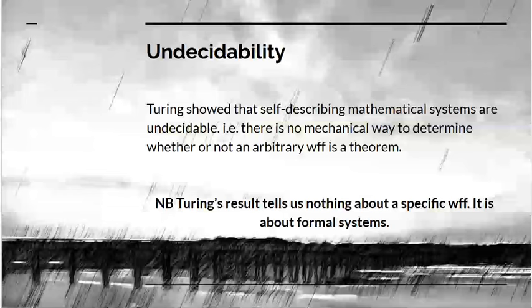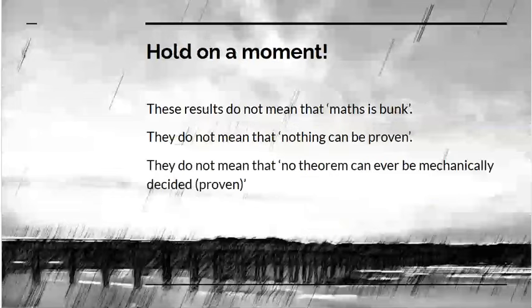We want systems to be consistent, so we must accept that there may be some theorems which can't be proved if Gödel is right. Turing's point was to show that the decision problem couldn't be achieved, that self-describing mathematical systems are undecidable. There is no mechanical way to determine whether an arbitrary formula is a theorem. But it tells us nothing about a specific formula. It says something about the system which was used to write that formula.